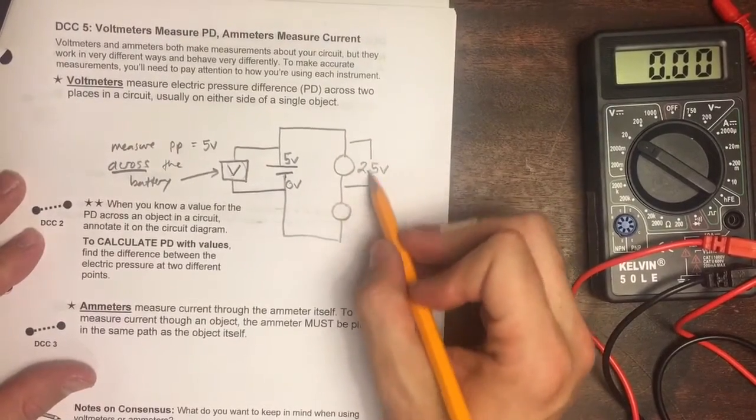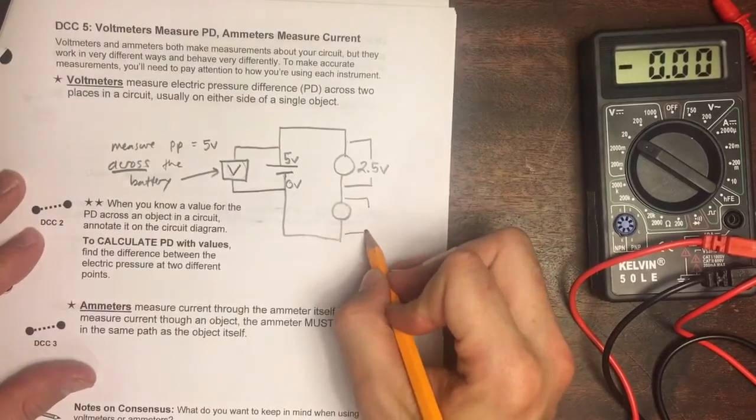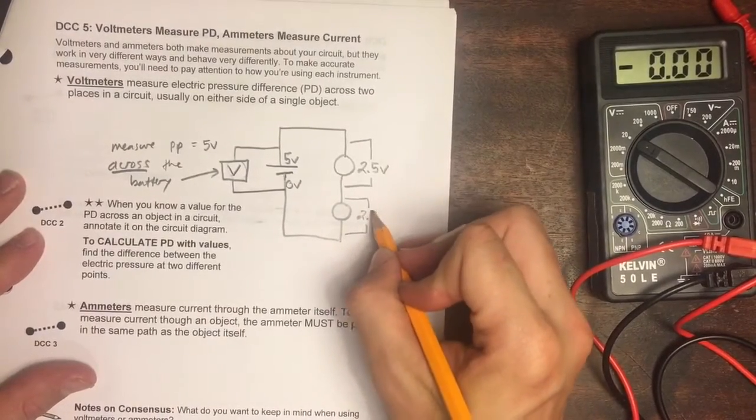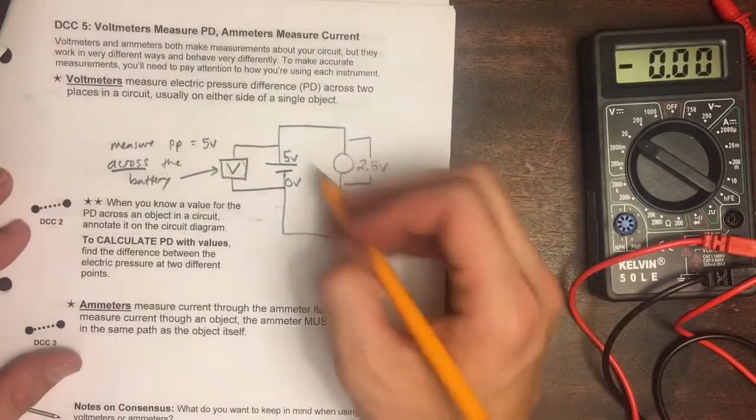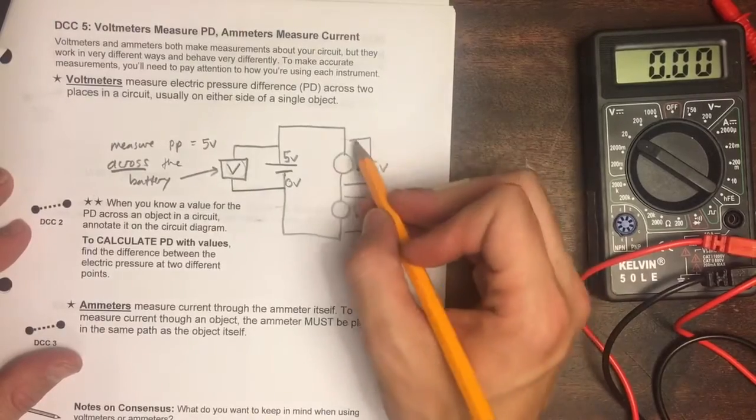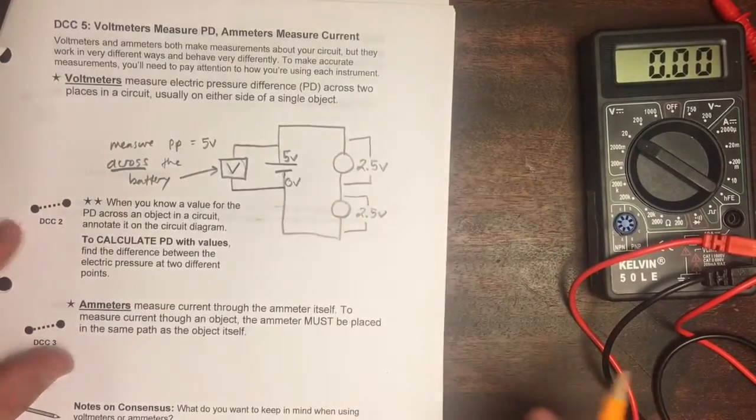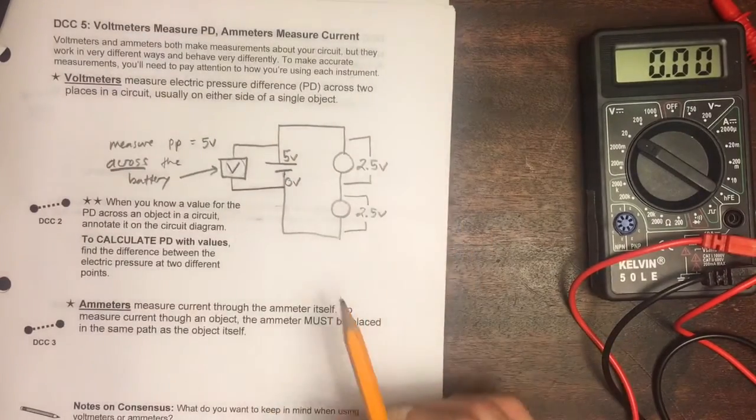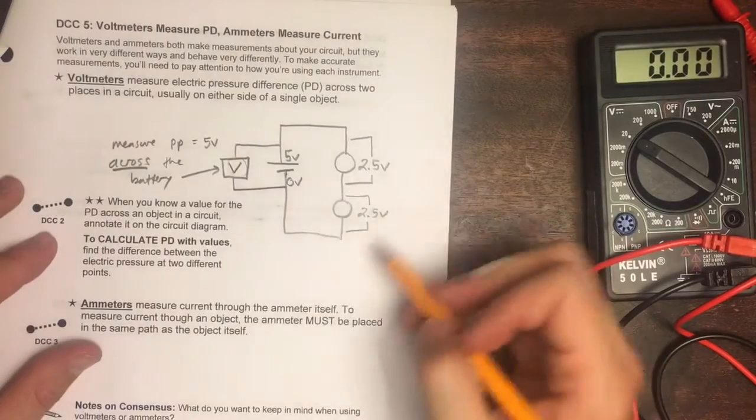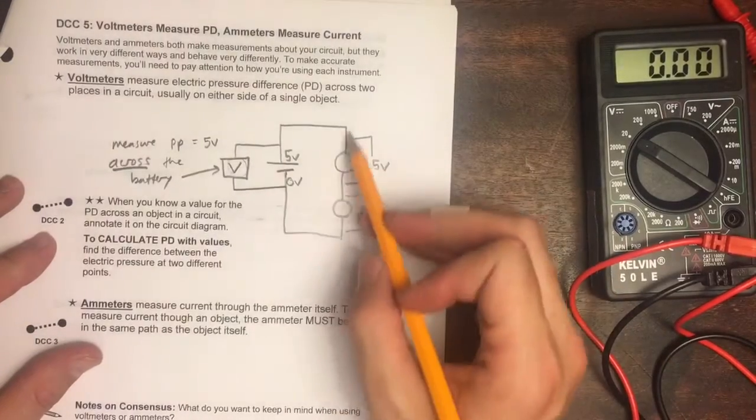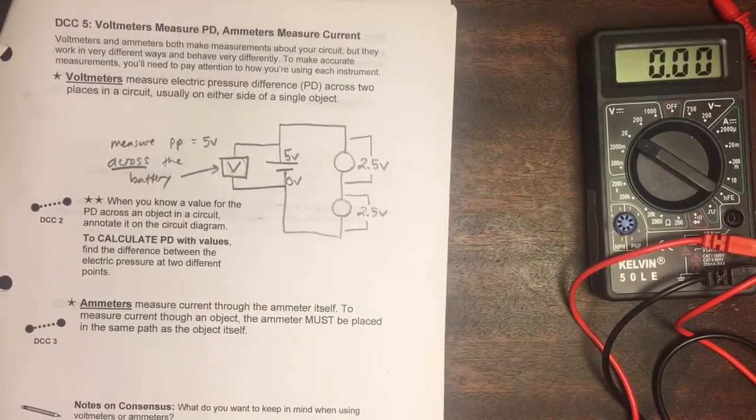We can identify if we measured it would actually be 2.5 volts. That's how we show the pressure difference across this bulb. The pressure difference across this bulb would also be 2.5 volts. That voltmeter is measuring the pressure difference across each of these objects. We could build a circuit with two bulbs and measure it out and it would come out something like this. Again, this is assuming that the pressure difference across the wires is zero or at least very close to zero.